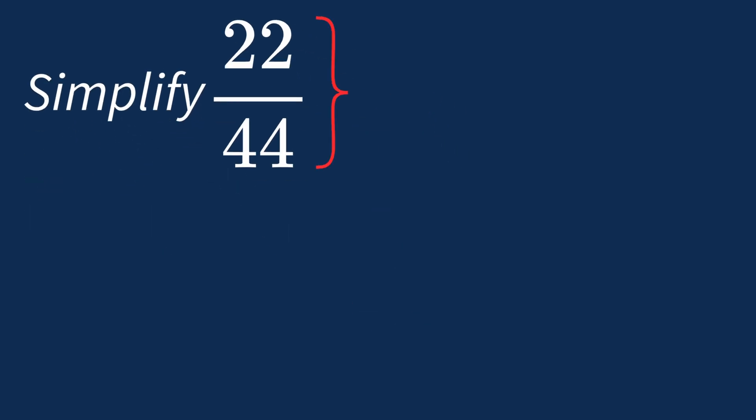To simplify 22 over 44, we need to look for the common factors between the top number, the numerator, and the bottom number, the denominator.